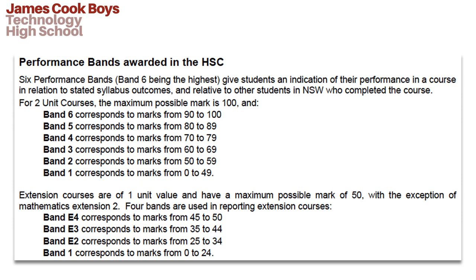In this slide, I will talk about the performance bands awarded in the HSC. There are 6 performance bands, band 6 being the highest, which gives students an indication of their performance in a course in relation to the syllabus outcomes and relative to other students in NSW who have completed the course. For 2 unit courses, the maximum possible mark is 100, and band 6 corresponds to marks from 90 to 100, band 5 corresponds to marks from 80 to 89, and so forth. Extension courses are of 1 unit value and have a maximum possible mark of 50, with the exception of Extension 2 Mathematics. There are 4 bands used to report extension courses: band E4 corresponds to marks from 45 to 50, band E3 corresponds to marks from 35 to 44, and so forth.